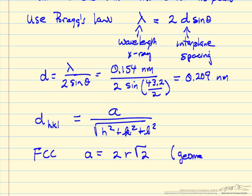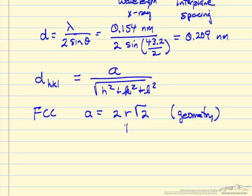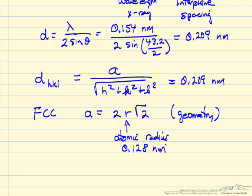This is from geometry of the crystal structure. The atomic radius is something we can look up in a periodic table. Its value is 0.128 nm. We know the atomic radius, which means we can calculate a. We know d equals 0.209 nm, so we can solve for h²+k²+l².